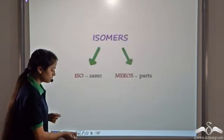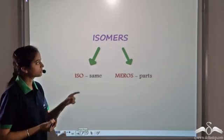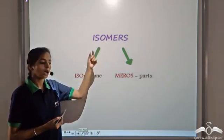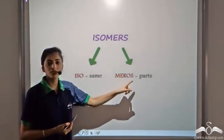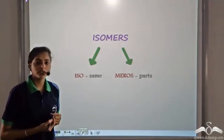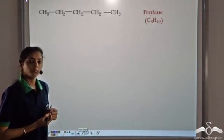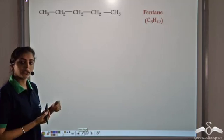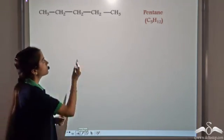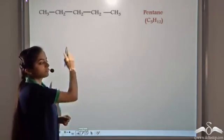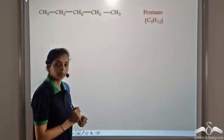Now we define isomers for organic compounds. It comes from two words: iso means same and miros means parts. Pentane — this is the formula of pentane, this is the condensed formula of pentane. Since there are 5 carbon atoms and 12 hydrogen atoms, this is the molecular formula.